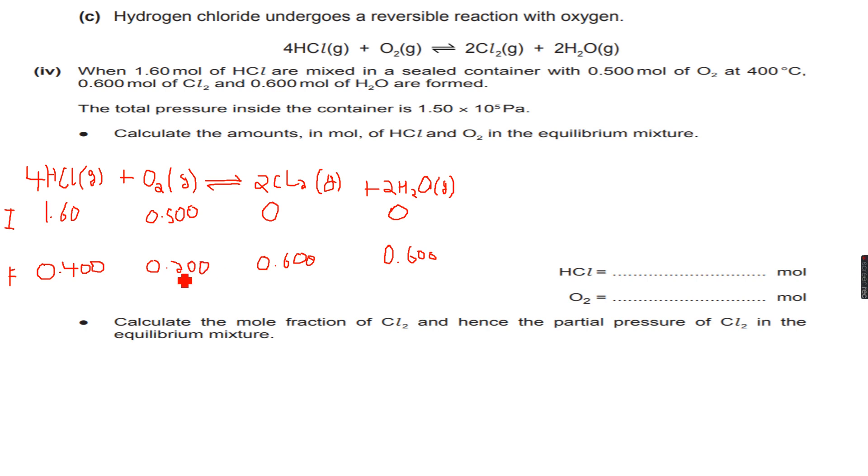So 0.2 is left. The amount in mole of HCl is 0.400 as we have calculated, and the amount in mole of O2 is 0.200 as we have calculated in the equilibrium mixture. So this is correct, and we have now the amount in moles of all four substances in the reaction in the equilibrium mixture.